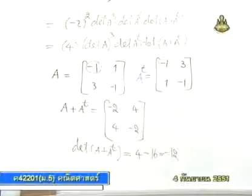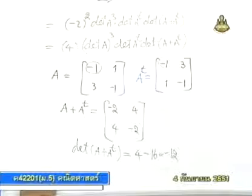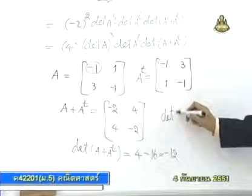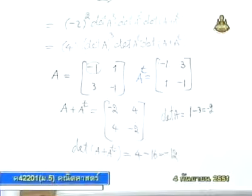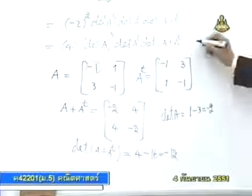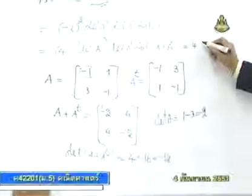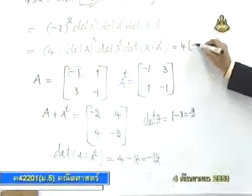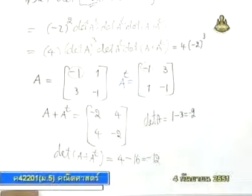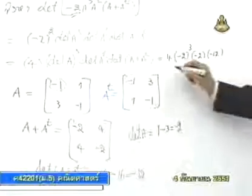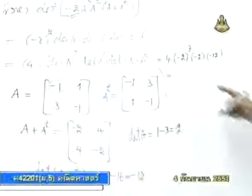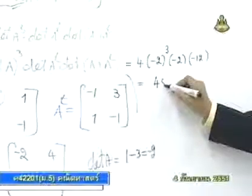พอเราหาได้แล้วก็ไปหา det(a). det(a) เฉยๆ เท่าไหร่? det(a) เฉยก็คือ 1 ลบด้วย 3 ก็คือ -2. det(a) เฉยนะครับ ได้ -2. ก็มาทำตรงนี้เลย: 4 คูณด้วย det(a) มันคือ -2 ก็ได้ -2 ยกกำลัง 3. det(a ทาน suppose) ก็คือ det(a) ได้ -2 เฉยๆ. det(a บวก a ทาน suppose) ได้ -12.